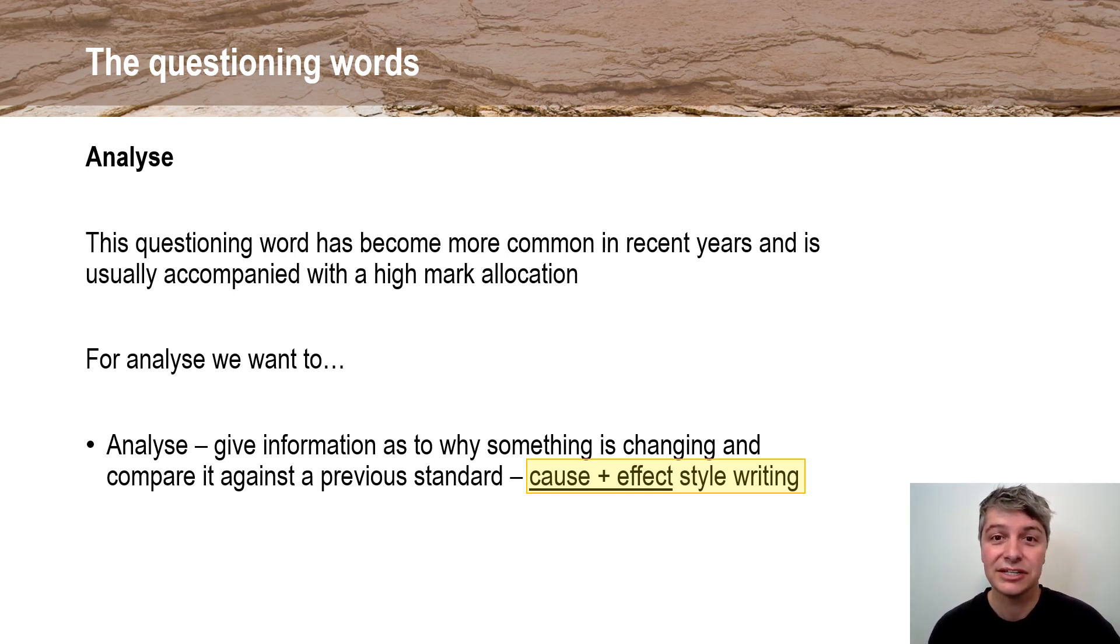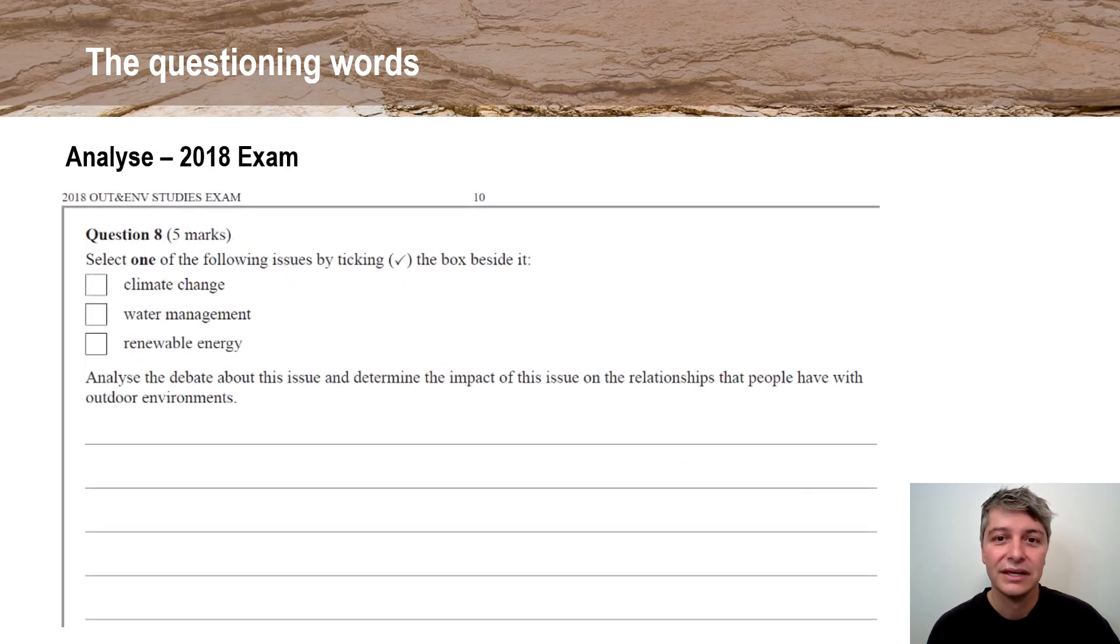Let's look at a past exam question that's asked students to analyze. So here we look at that question that the chief assessor was referring to here, and this question asks students to analyze the debate about this issue and determine the impact of this issue on relationships. So here we're looking at the social and political debates within unit three in area study two. So you can see that this is really tell me about the debate and its impact on the relationship. Tell me about the debate being the cause, and then determine the impact of the issue on relationships being effect.